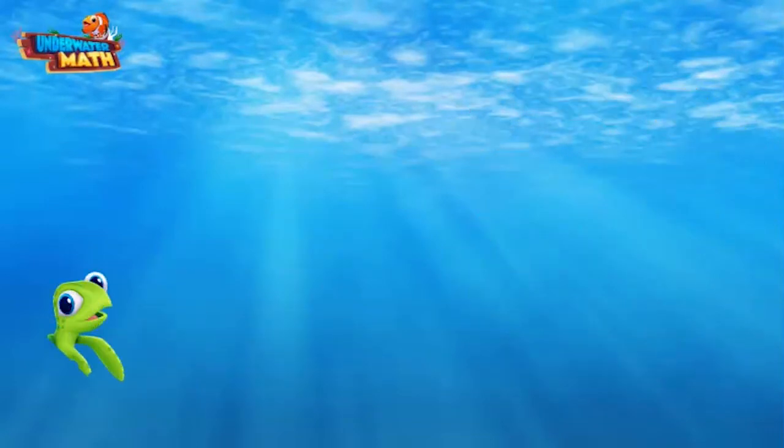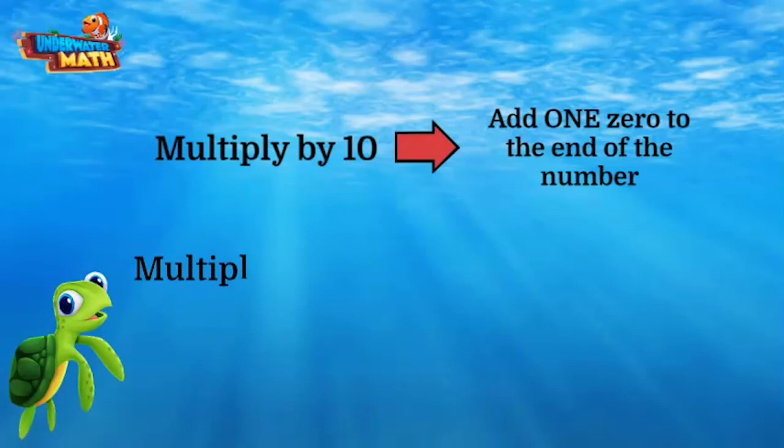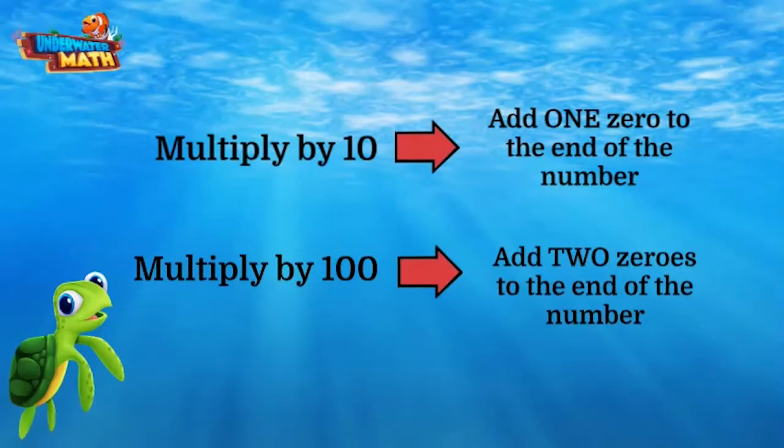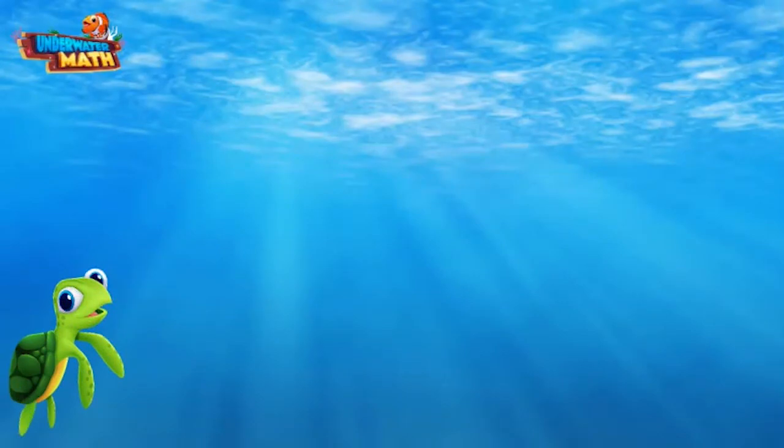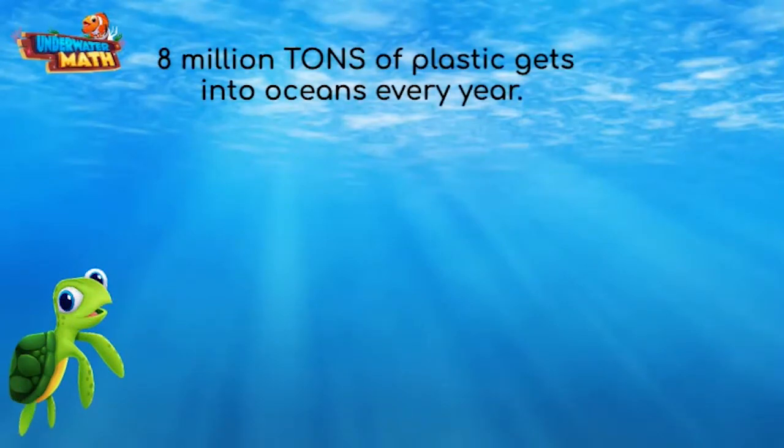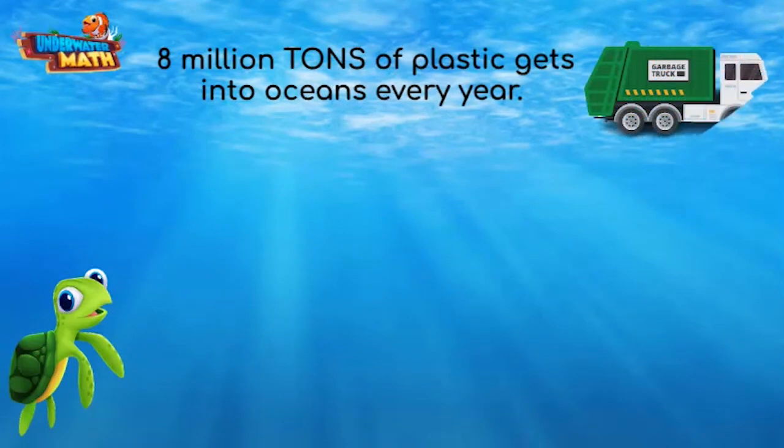Here are some uncool facts about trash in our ocean. 8 million tons of plastic gets into oceans every year. That's equivalent to dumping a garbage truck of plastic waste into the ocean every minute. Most trash gets into the ocean from litter on the beach or from boats, which is why picking up trash from the beach is so important.